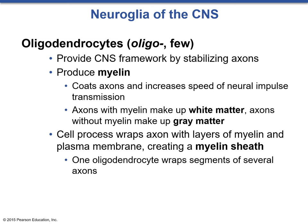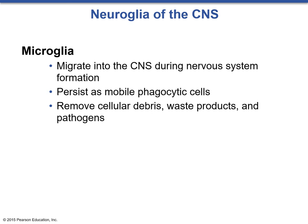Microglia are the smallest of all CNS glial cells, known as the cleanup squad. They migrate around the central nervous system and function as phagocytes — cell eaters — going around like Pac-Man to remove cellular debris, waste products, and pathogens.